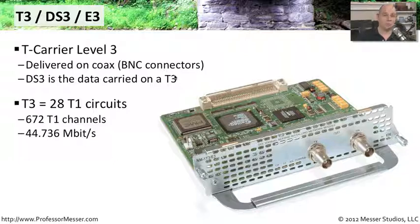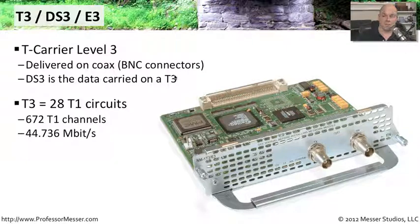That brings us to a total throughput over a DS3 connection of 44.736 megabits per second — a significant increase in speed over just a single T1 line.